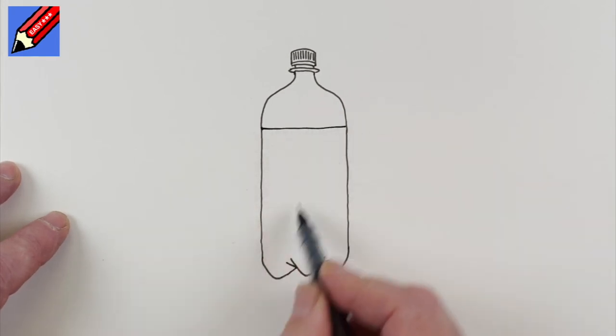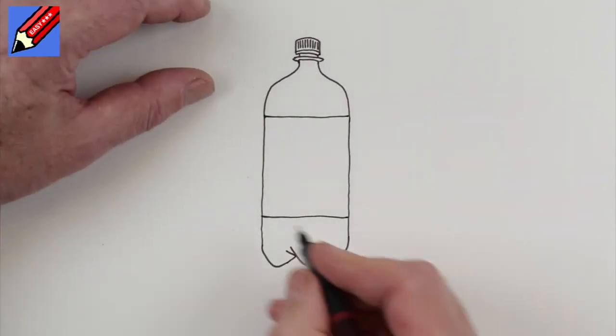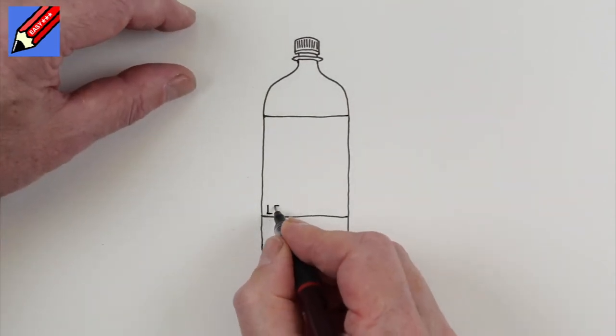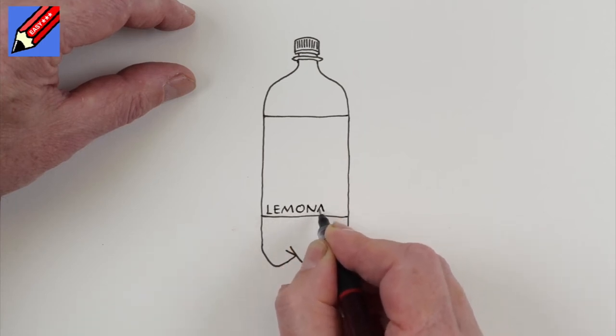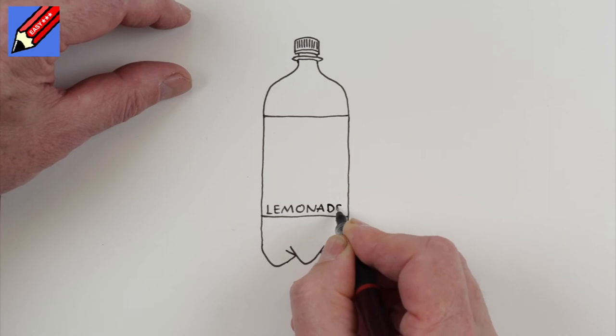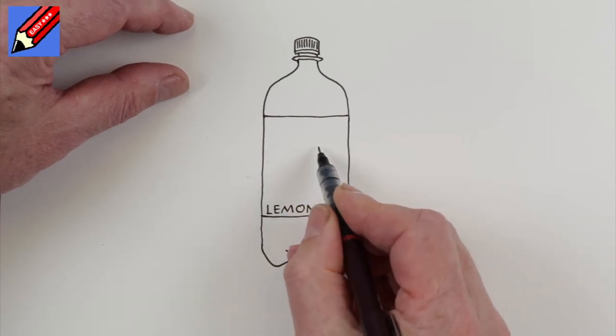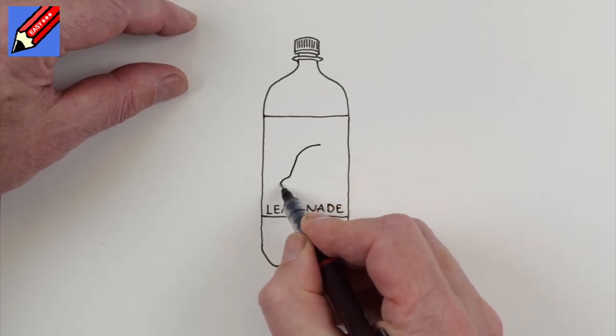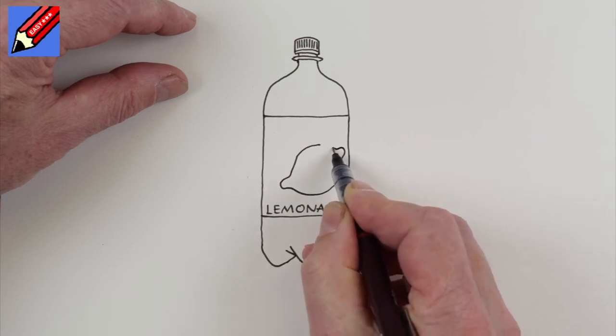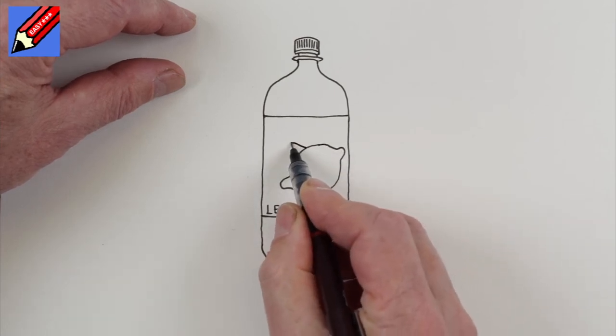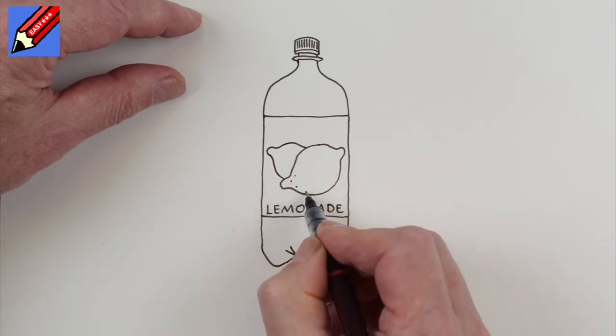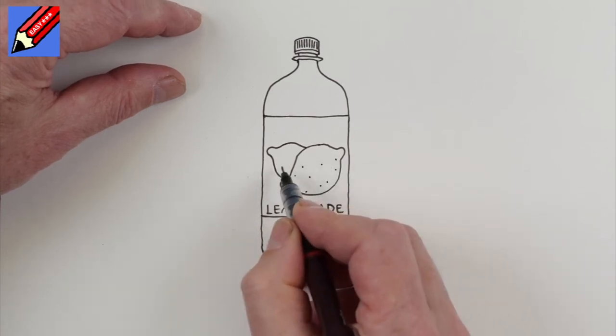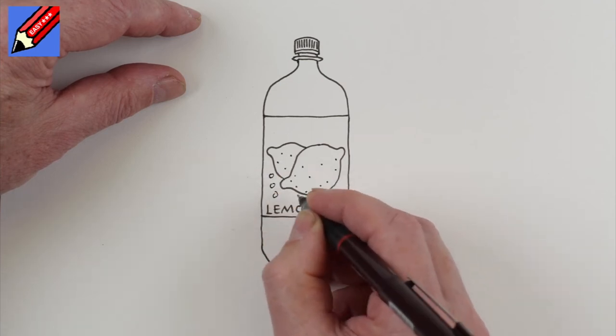Let's draw the label across there and we can call this Lemonade and let's draw a couple of lemons sort of like that with little lemony bits on the edge and then we'll have another bit kind of like that which is behind it and then we'll have those kind of dotty bits, don't they, and we'll have some bubbles as well.